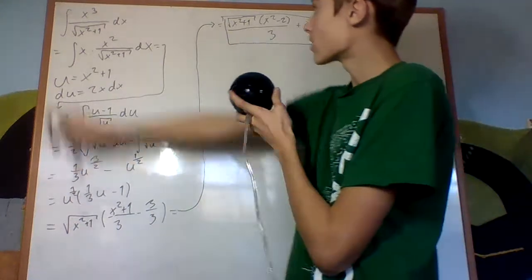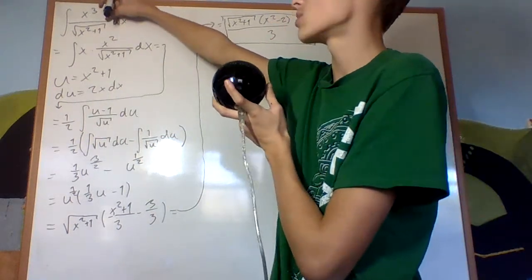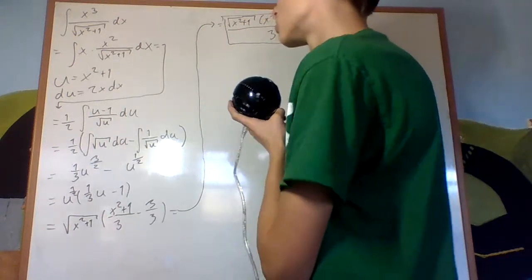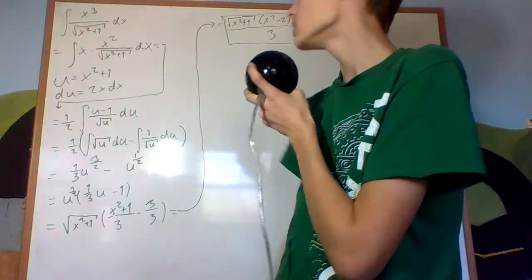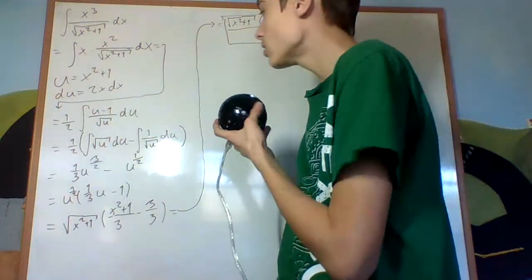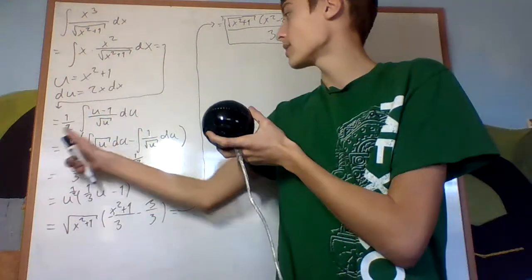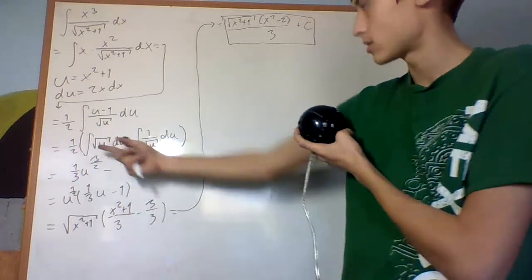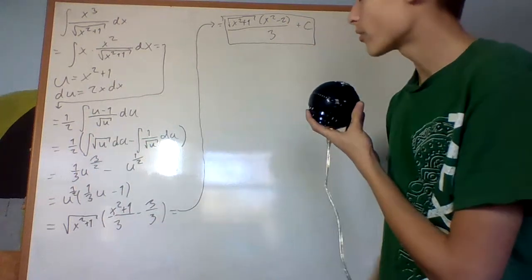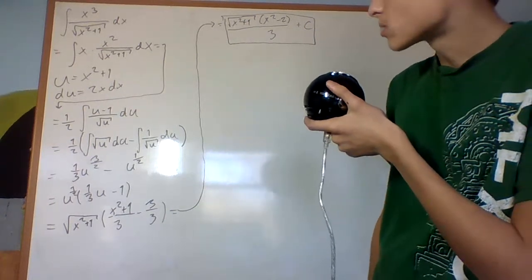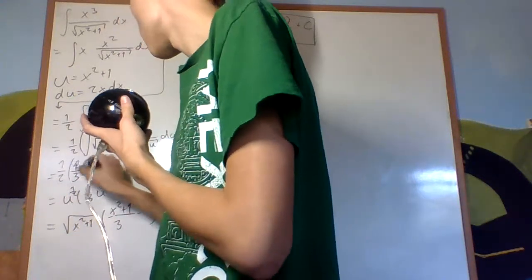We could also have done the integral of x cubed over the square root of x squared plus 1 by separating it into x times x squared over the square root of x squared plus 1, making the substitution u equals x squared plus 1, du equals 2x dx, to get one half the integral of u minus 1 over the square root of u, which gives one half times the integral of the square root of u minus 1 over the square root of u. Integrating both of those is pretty easy, then multiply by a half.